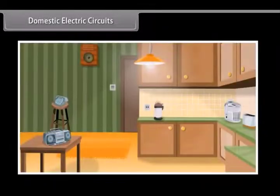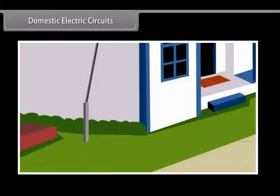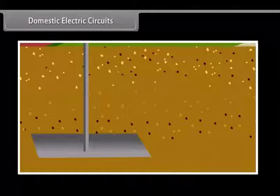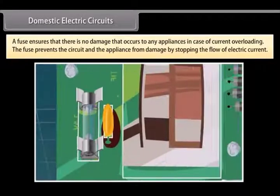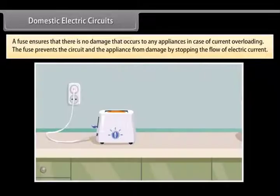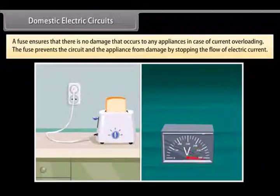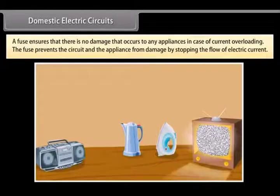There are different circuits used for different appliances being used in the house. The earth wire is connected to a metal plate deep into the earth to avoid receiving any severe shock in case of any leakage of current while using the appliances. A fuse is an important component of all circuits. It ensures that there is no damage that occurs to any appliances in case of current overloading. Overloading occurs when the live wire and the neutral wire come in contact with each other or there is a rise in the supply voltage. In this case, the fuse prevents the circuit and the appliance from damage by stopping the flow of electric current.